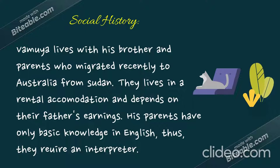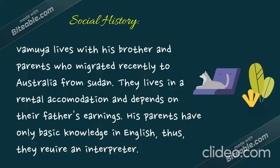For the social history, write the personal history first, then the family situation. For the baby, there is nothing to write regarding a disease condition. Wamiya lives with his brother and parents, who migrated recently to Australia from Sudan. They live in rental accommodation and depend on their father's earnings. His parents have only basic knowledge of English, thus they require an interpreter. We have already mentioned the family doctor in the present medical paragraph, so no need to repeat it here.